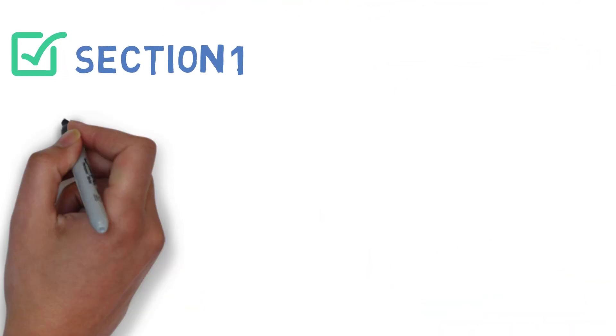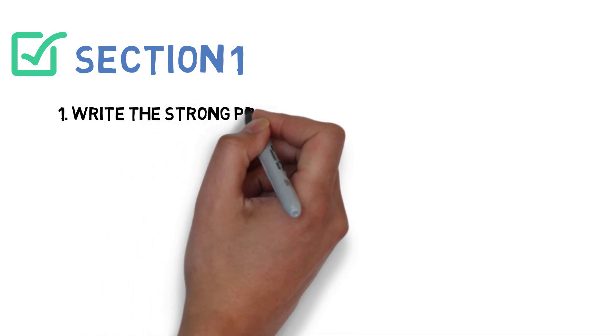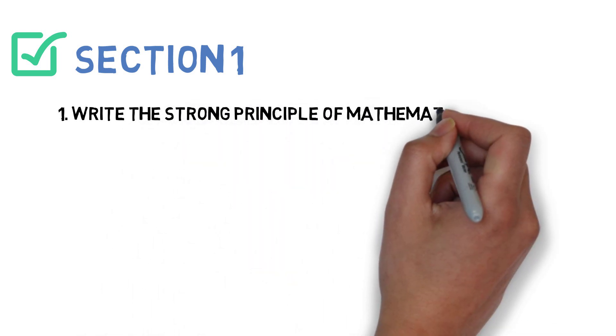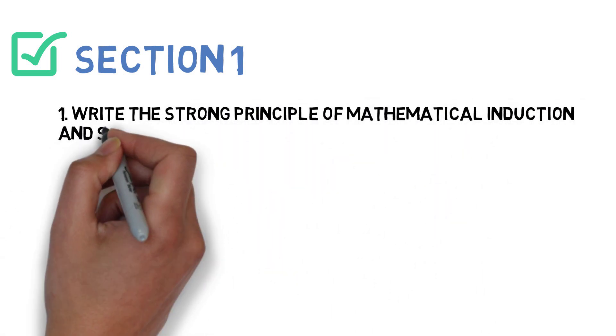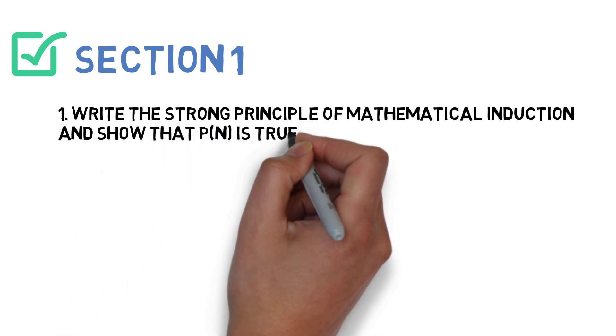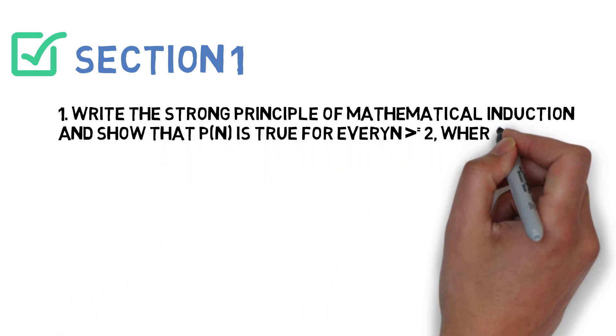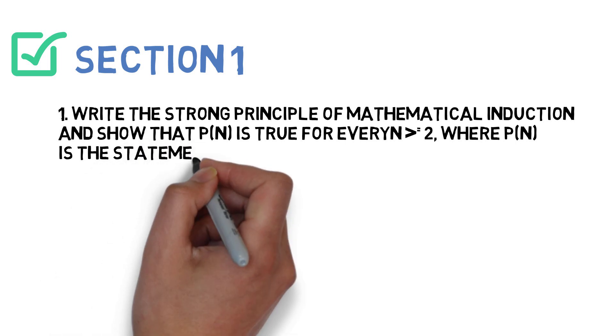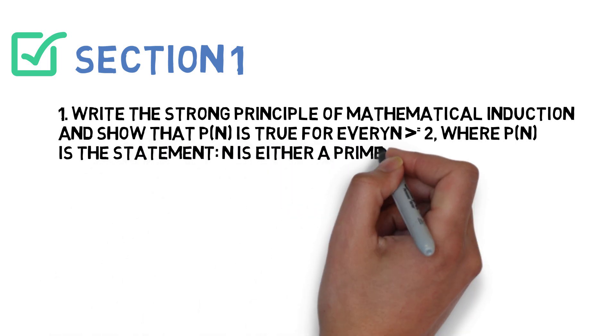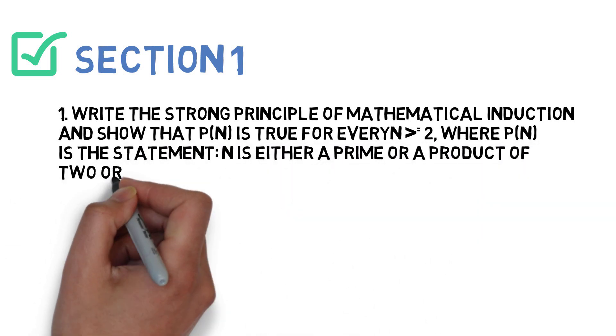The first question is: Write the strong principle of mathematical induction and show that P(n) is true for every n greater than or equal to 2, where P(n) is a statement that n is either a prime number or a product of two or more primes.